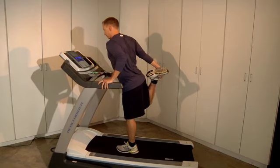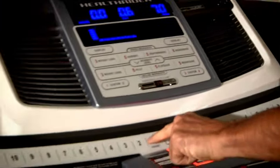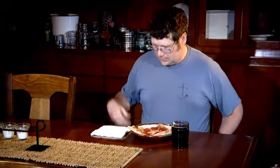In our experiment, Eric will be running on a treadmill at 7 miles per hour at a 10% incline. It's an arduous task. Now he's going to do this for as long as it takes Craig here to eat two slices of pepperoni pizza and a small coke.